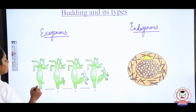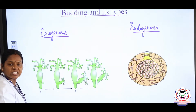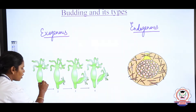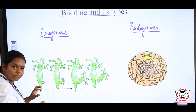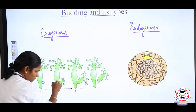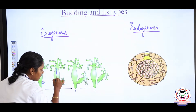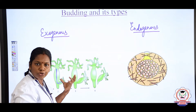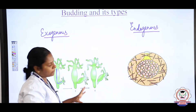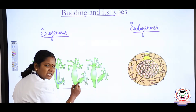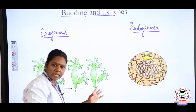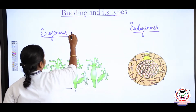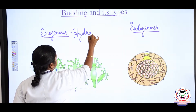What do you mean by exogenous? If the buds are formed on the outer surface of an organism, it is said to be exogenous. In hydra, when plenty of food is available, a small bud forms on the outer surface. The bud grows, its gastric cavity connects with the parent's gastric cavity, and it receives complete nutrition from the parent. The bud produces tentacles and a mouth, and when fully grown it constricts, separates, and becomes an individual hydra. The example for exogenous budding is hydra.